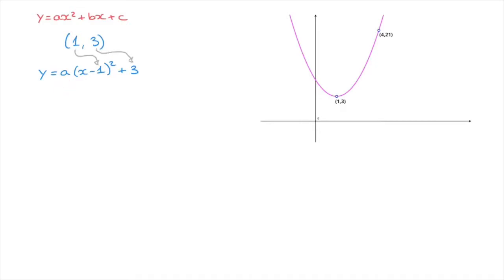To find the value of a, all we need are the coordinates of one other point along the parabola's length. In this question, we're given the point with coordinates 4, 21. The fact that the parabola passes through this point tells us that when x equals 4, y must equal 21.